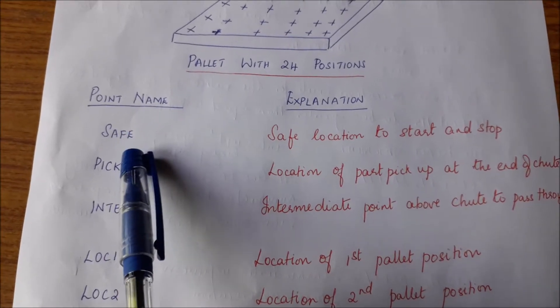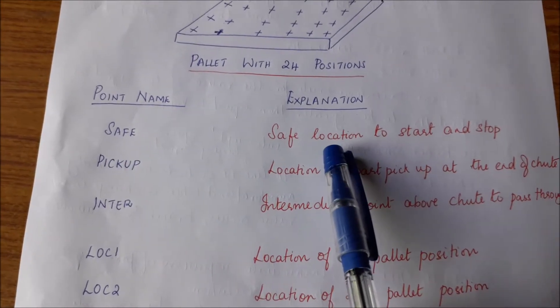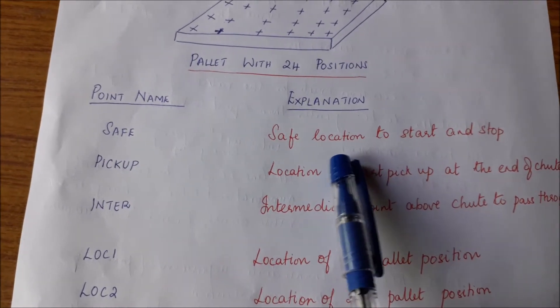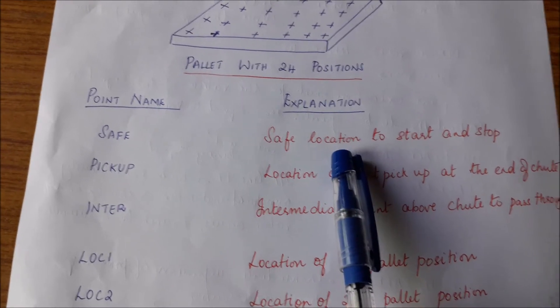Now for example, there is a point that is called safe. So safe is a location from which the robot can start and stop the palletizing operation. So it is a safe location to start and stop the palletizing operation.